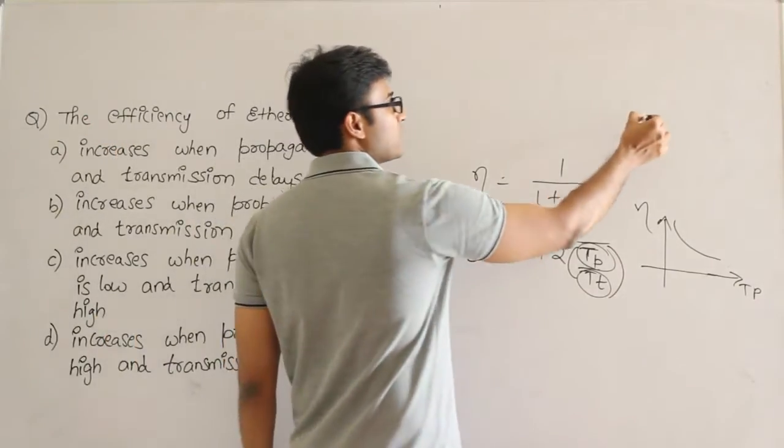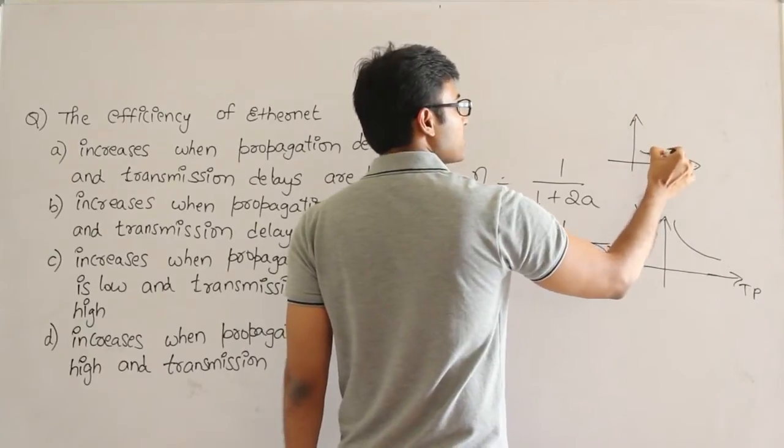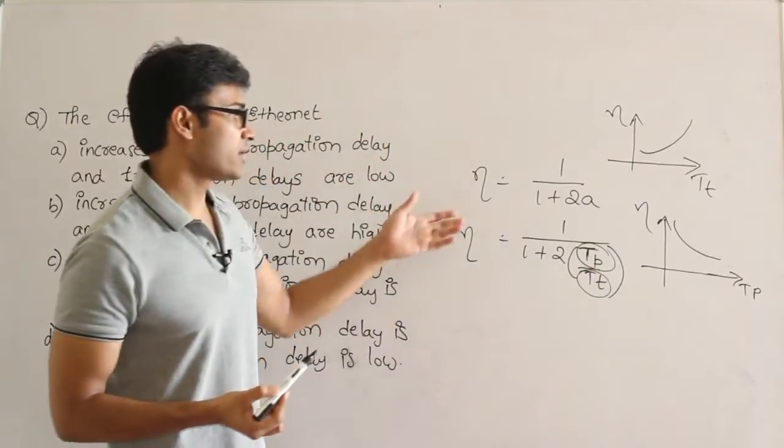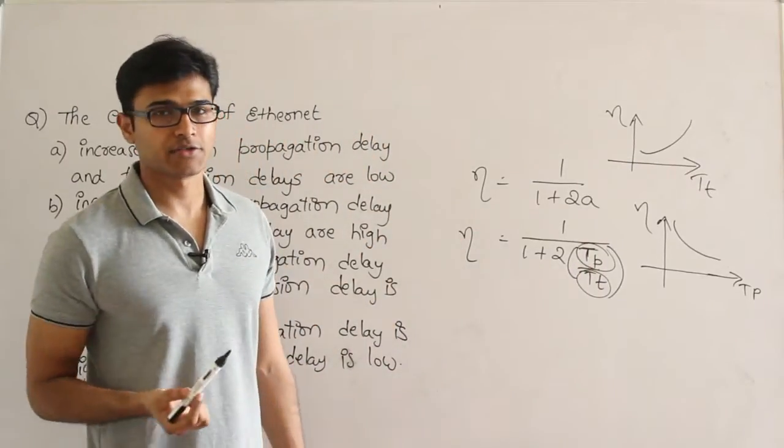So as we increase this, it will look like this: efficiency versus Tt. It is not directly proportional or inversely proportional. It is a kind of parabola. Therefore, you are not going to get a straight line.